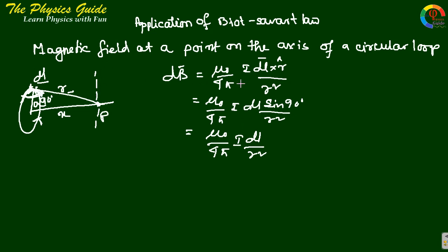This is the magnetic field magnitude. The direction of dB should be perpendicular to both R and dL, because this is the dL cross R result. So the magnetic field direction is perpendicular to both dL and R. Let this angle be theta.